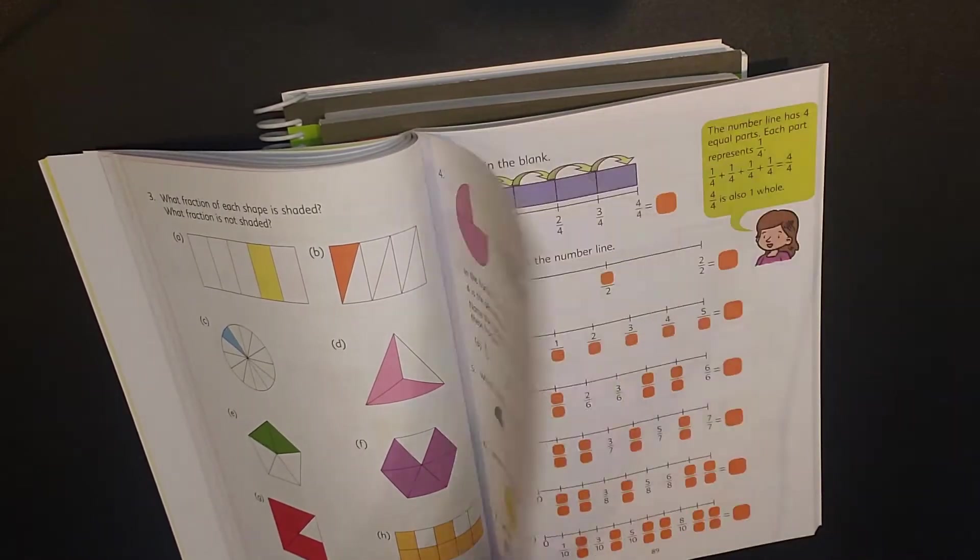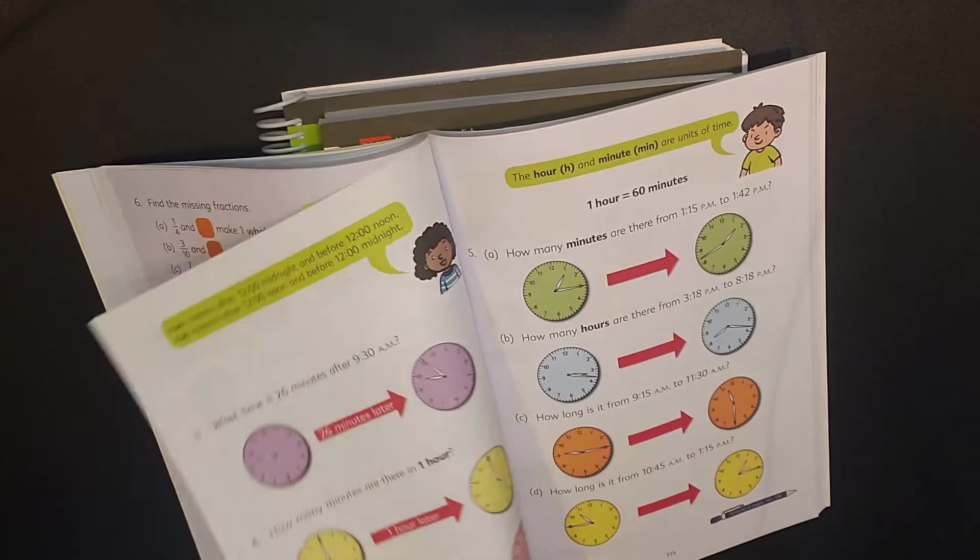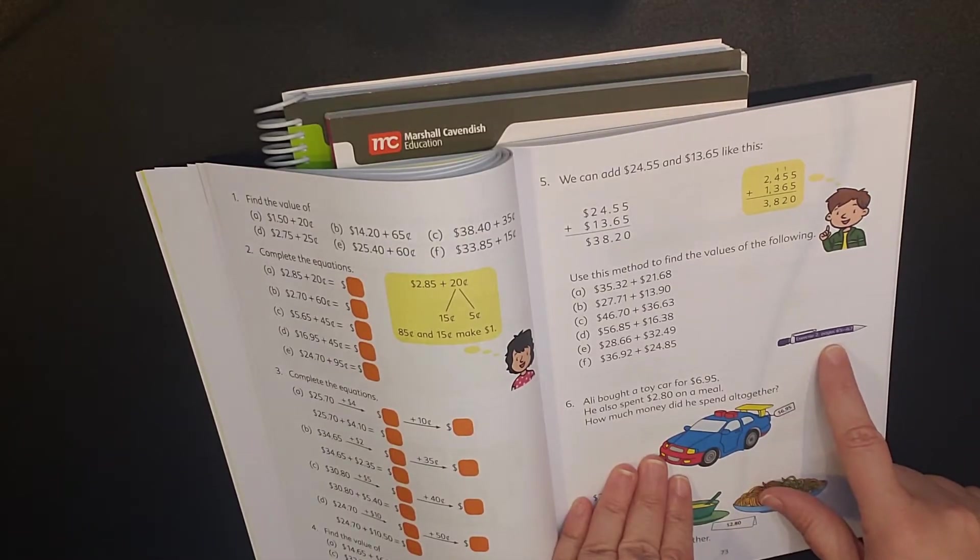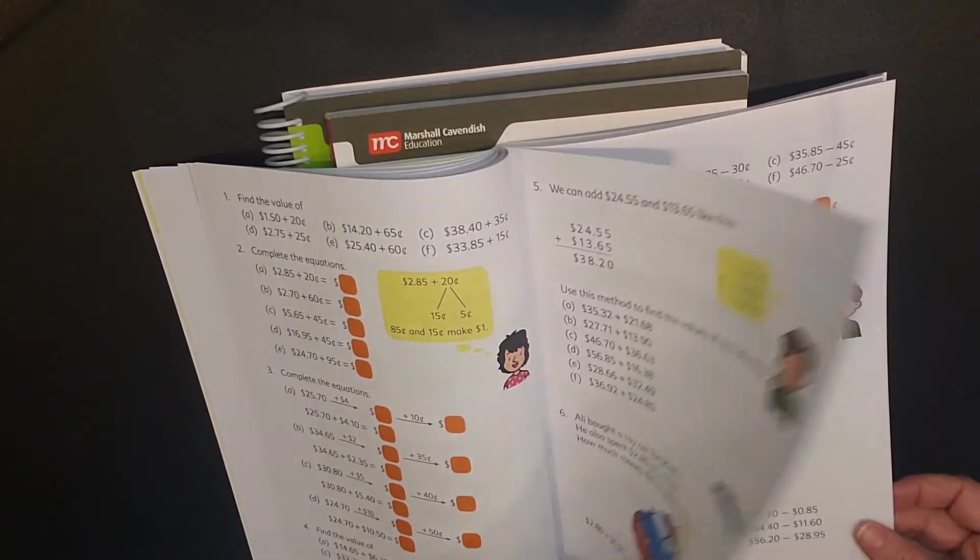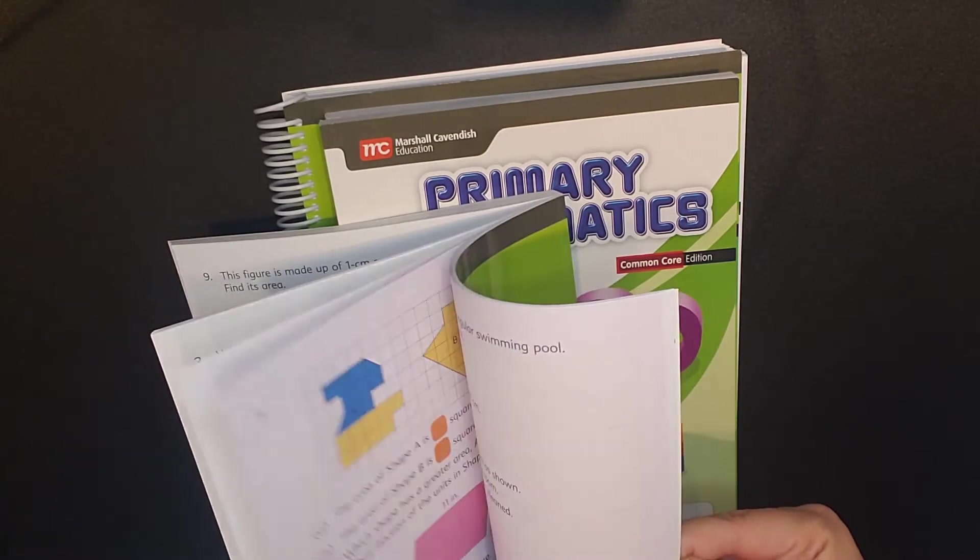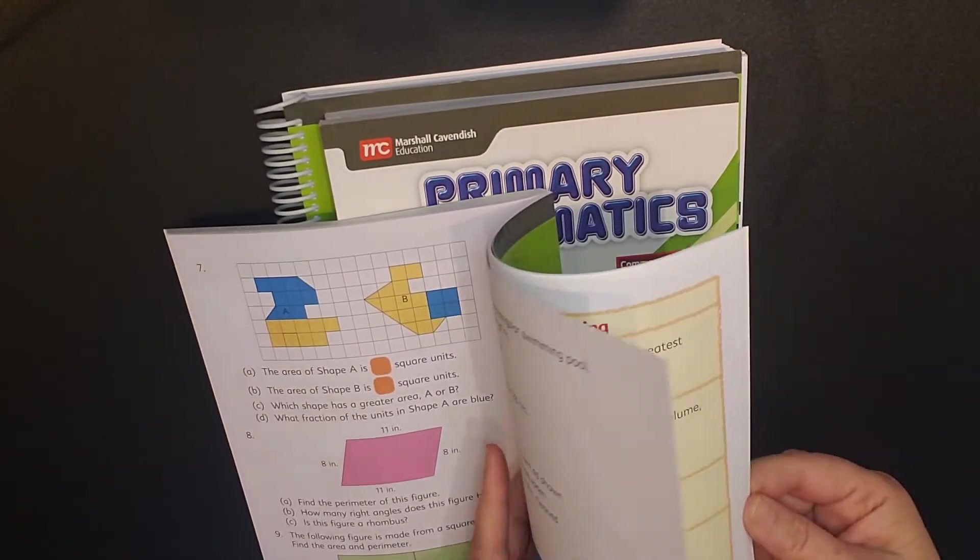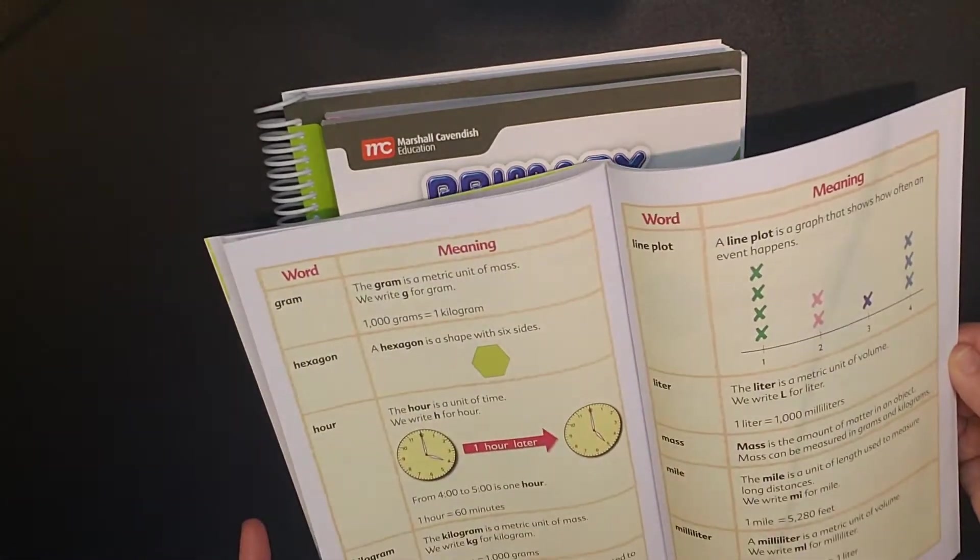So now we're into the review for volume. And so this review is really nice because it gives you a chance to see if you need to go back and review anything else, any of those concepts before you move forward. And then we have fractions, some nice pictures.